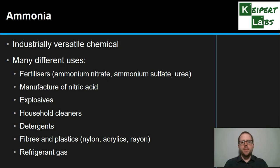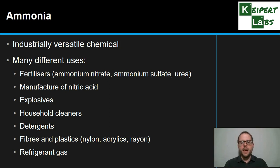We're thinking about it as a precursor for the production of nitric acid, which is also then used to produce a range of things. It's used in the production of explosives, which is vitally important. It's also in everyday things like household cleaners and detergents. We use it in the production of fibers like acrylics, nylon, and rayon, and also as a greener alternative refrigerant gas in air conditioners, refrigerators, and freezers.